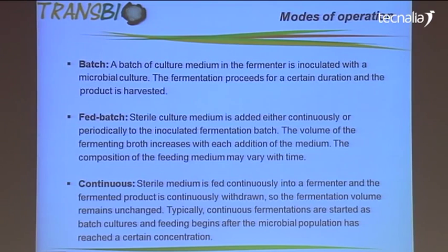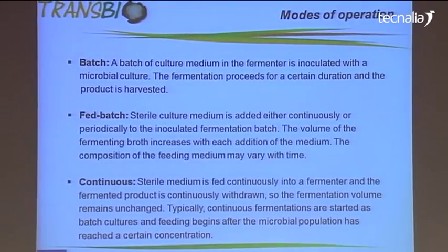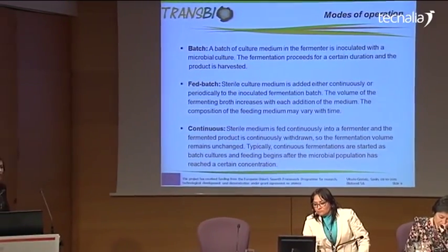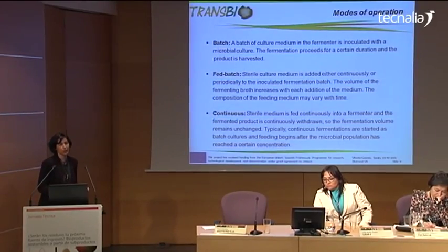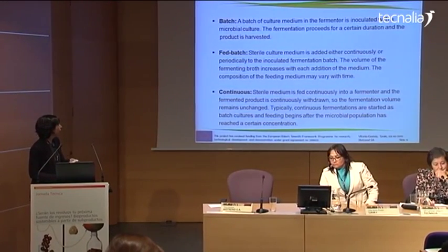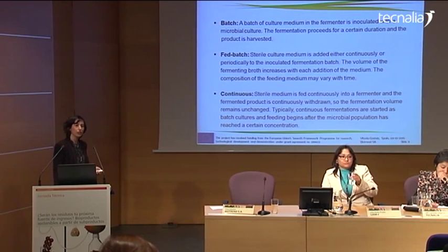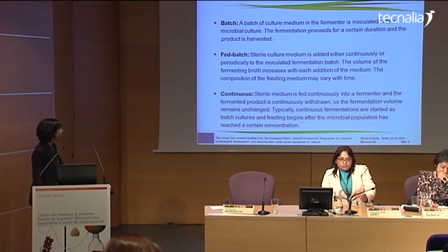Fermentations can be operated in batch, fed-batch, and continuous mode, with fed-batch being the most versatile and the one normally used to build up high concentrations of biomass. In this mode of operation, we normally start with a growth medium with a low concentration of carbon source, and then after a period of batch, we start to feed the culture with a concentrated solution of a given carbon source like glucose. This feed solution can be fed continuously to the reactor, or can be varied over time.